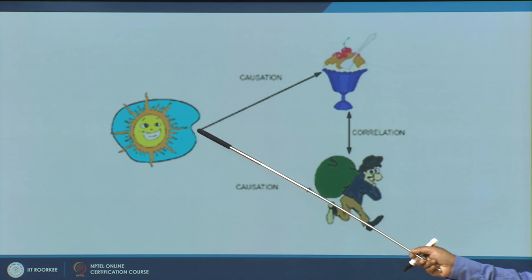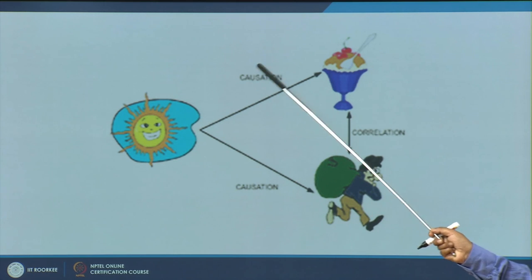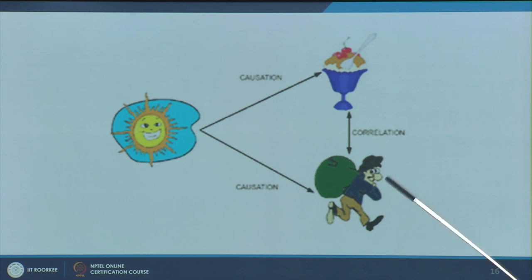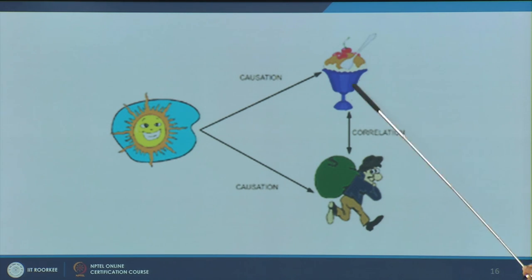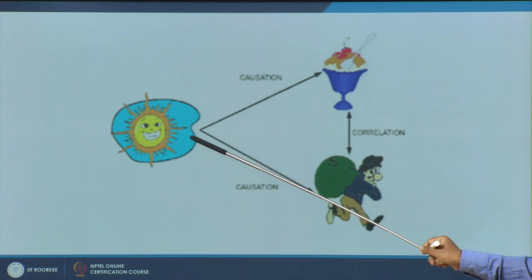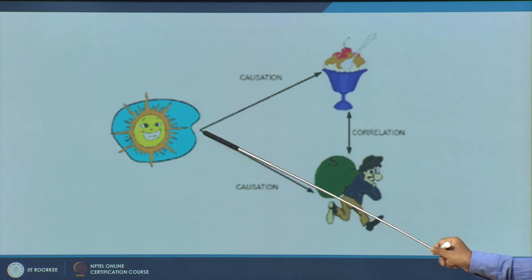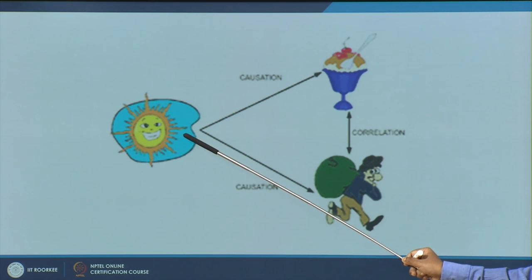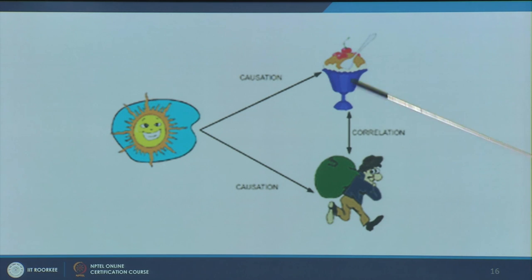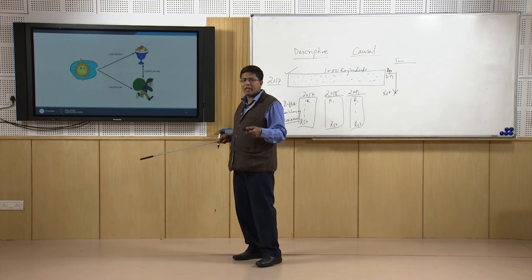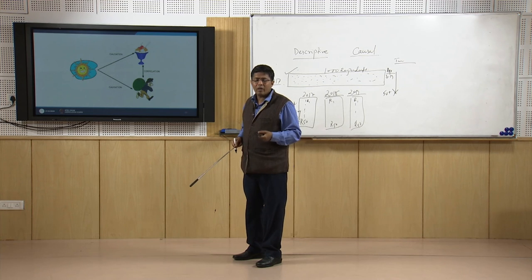A simple causal example: when the sun is glaring and it is very hot, a person becomes tired and thirsty, so the demand for ice cream goes up. Ice cream sales are dependent on temperature — the sun is the causal factor. Tiredness and depletion of energy are also caused by sun rays, and ice cream sales and tiredness are correlated. As a researcher, you identify what can be the cause and what can be the effect in your study — sometimes these are not visible to the naked eye and you have to go deep into the subject.